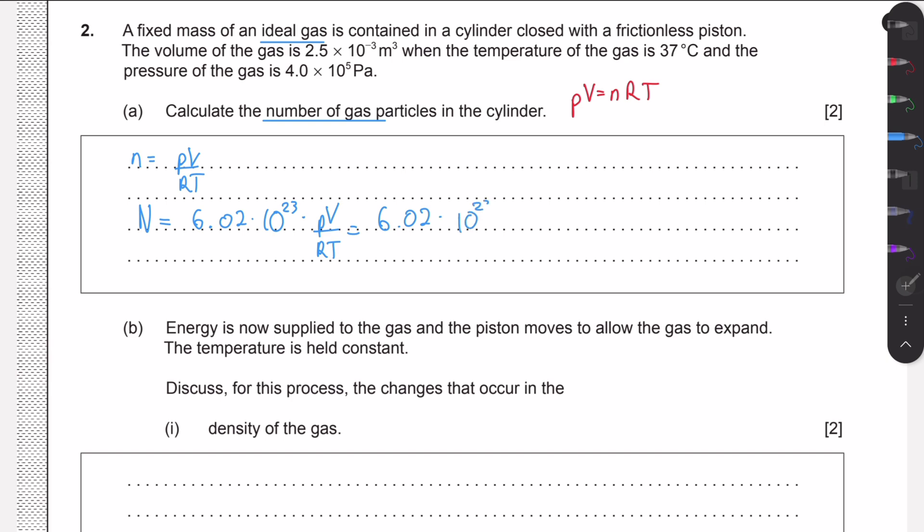Pressure was 4 times 10 to the 5, volume was 2.5 times 10 to the minus 3. We always want to make sure we work in SI units: Pascals, meters cubed, Kelvin. We don't have Kelvin here, so we add 273 to get 310 Kelvin. We divide by 8.31, which is the gas constant, times 310. This gives us 2.34 times 10 to the 23 particles.